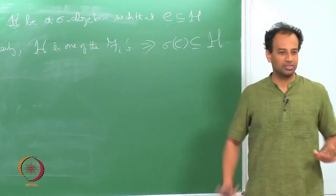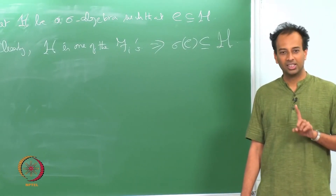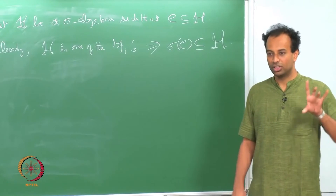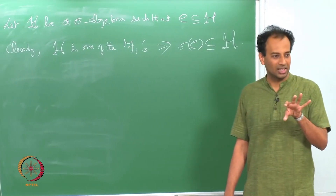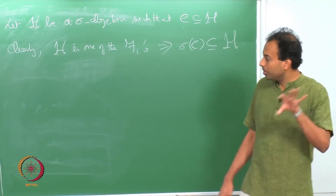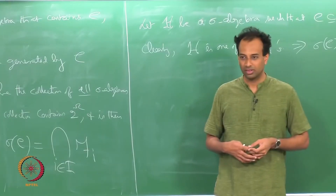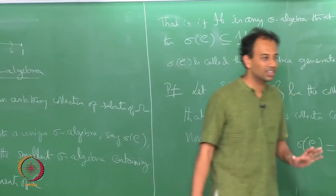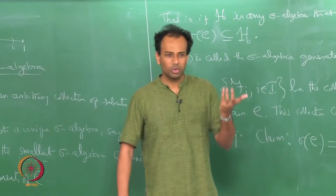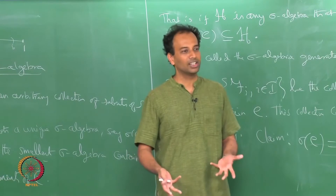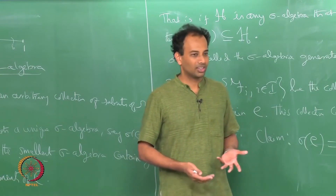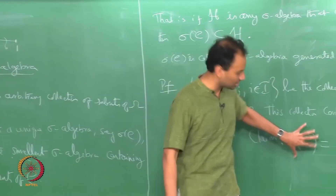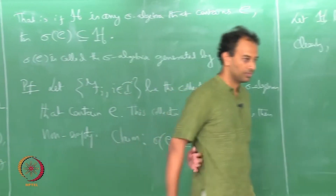So it is an existence theorem. Given any collection of subsets of omega you can find the smallest sigma algebra that contains this collection. The smallest sigma algebra that contains this collection could be 2^omega itself or could be some smaller sigma algebra, but it is definitely well defined. It could so happen that the only sigma algebra containing C is 2^omega, in which case bad luck — the smallest sigma algebra that contains your C is only 2^omega. But sigma(C) is well defined as the smallest sigma algebra that contains my collection C.